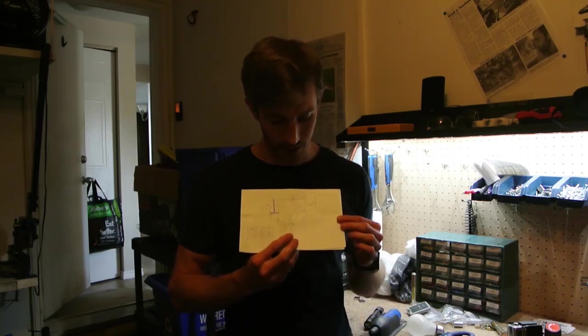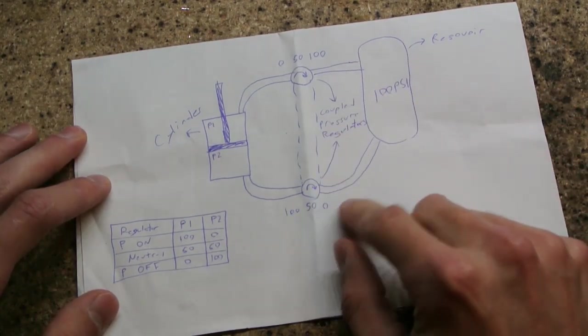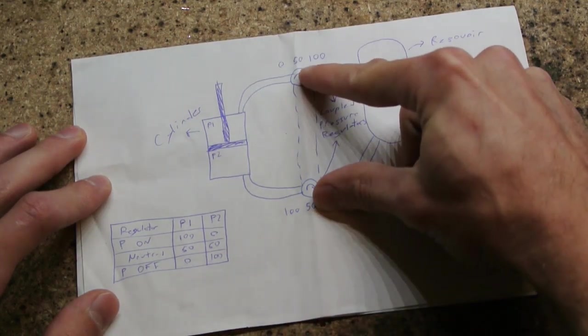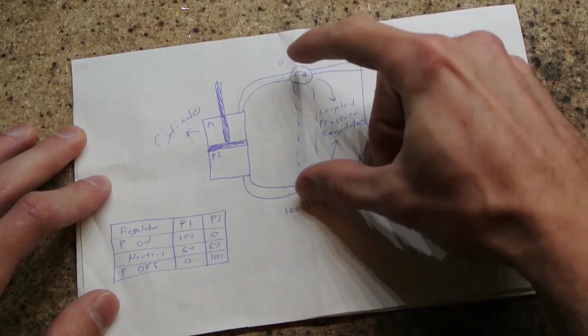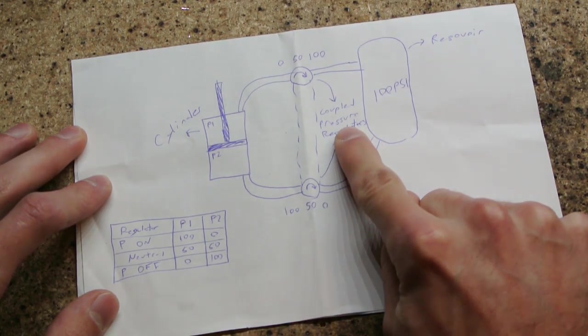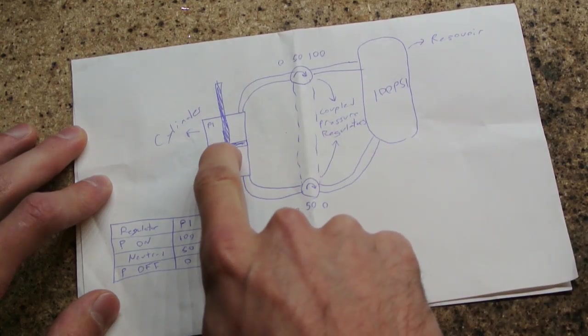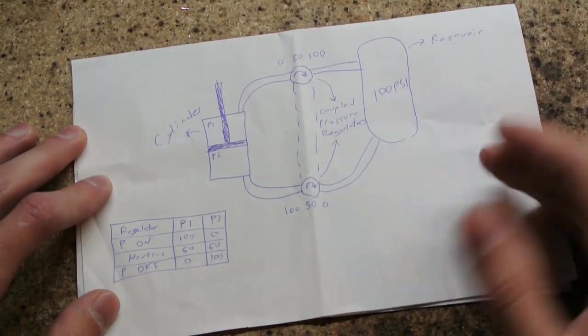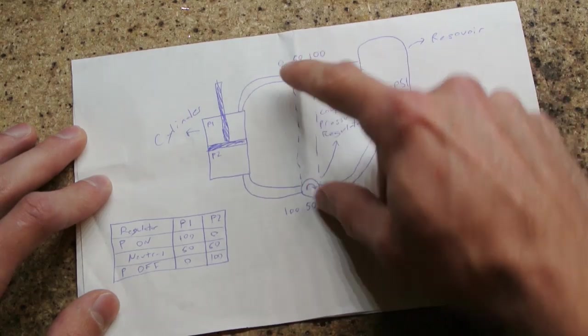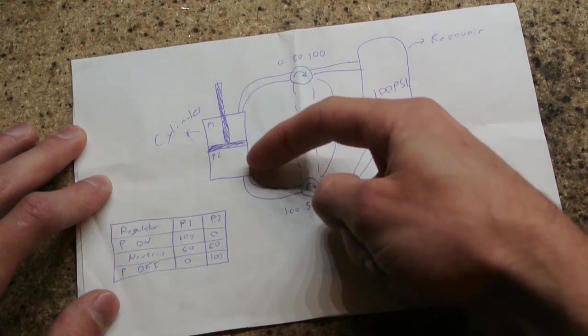So what I've got here is a little idea I've had. The system is actually pretty simple. Instead of having a valve bank controlling pressure going in or out of the cylinder, you have two pressure regulators. And what you do is you set these at 50% both ways and you couple them together. In the neutral position, the cylinder will be in the center if there's no load. For argument's sake, let's say it's 100 PSI. So you set both of these to 50 PSI. That means there's 50 PSI on this side and there's 50 PSI on that side, and the cylinder will stay in the halfway position.